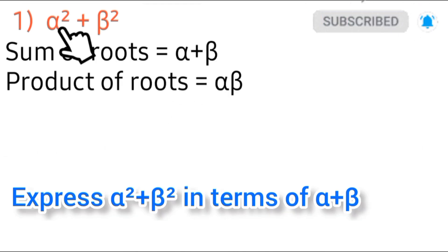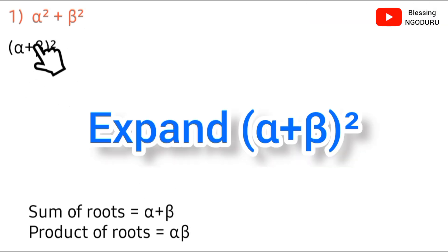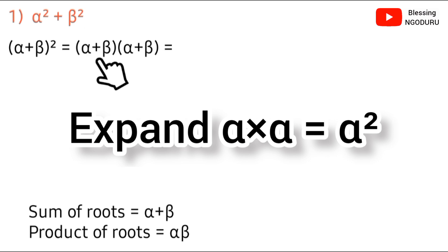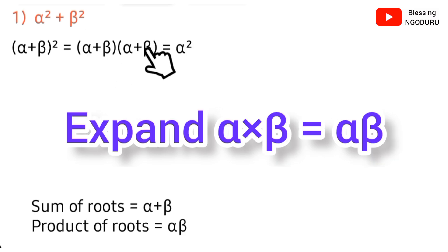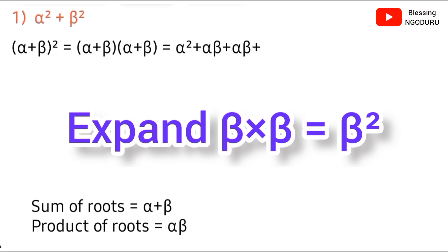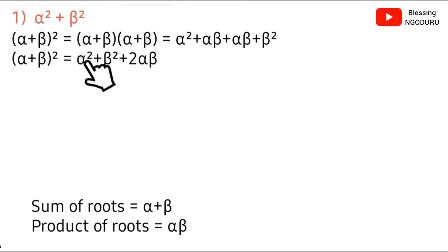Let's set sum of roots and product of roots aside and express α²+β² in terms of α+β. We start with (α+β)² and expand it: (α+β)(α+β) = α·α + α·β + β·α + β·β, which gives α² + β² + αβ + αβ, so α² + β² + 2αβ.